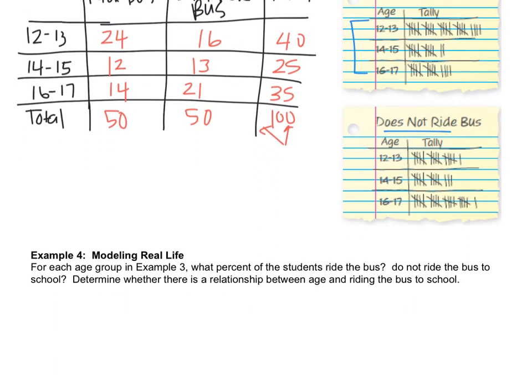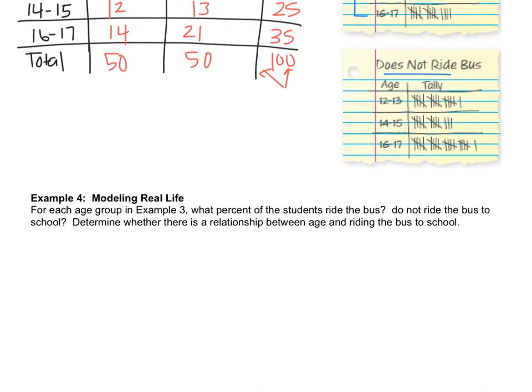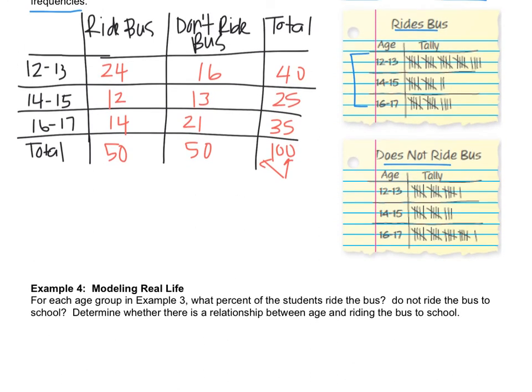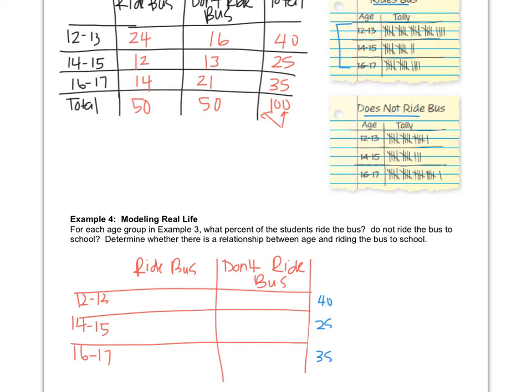For each age group in example 3, what percent of the students ride the bus, do not ride the bus, determine whether there is a relationship between age and riding the bus to school. So I'm going to actually make another chart. The chart is very similar. I took off the totals section, but what I did was I just put the totals over here because it says for each age group. So what we need to do is figure out how many people in each age group are doing it and then find that as a percent. So to find this number, it's not 24, it's 24 out of 40.